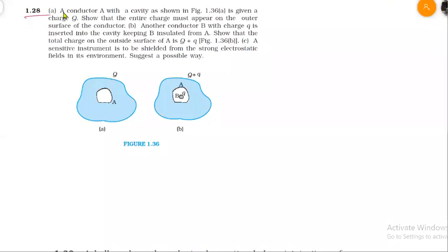This is question 1.28. A conductor A with a cavity as shown in the figure is given a charge Q. We need to show that the entire charge must appear on the outer surface of the conductor. First, let's consider the properties of a charged conductor.